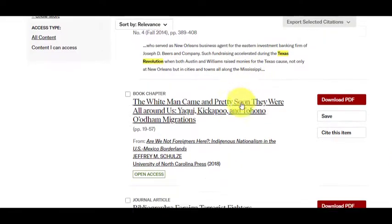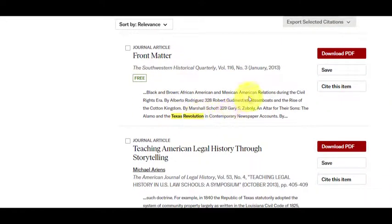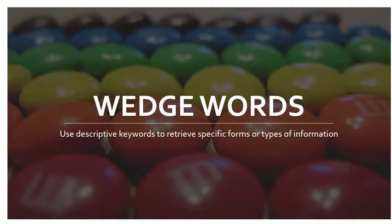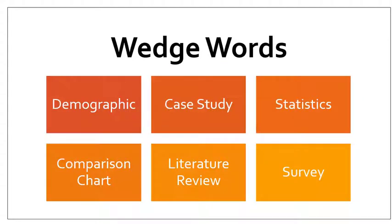It's going to refine your search a lot more and make sure you're not finding the two words in different places. It really does help to use the phrase searching tool. Wedge words use descriptive keywords to retrieve specific forms or types of information. Wedge words include using the keyword 'demographic' when you want a population or group of people, or 'case study' when you want a scientific exploration of a particular topic to ensure you have sound evidence. 'Statistics' is another one — you want numbers to support your argument.